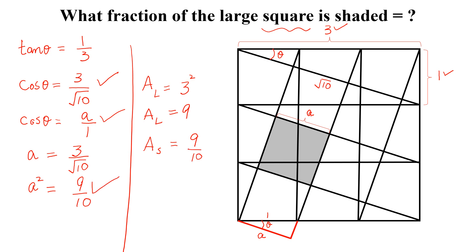Now what fraction of the large square is shaded? So area of the shaded region divided by area of the large square, 9 divided by 10, divided by 9. So we can write it multiplied by 1 by 9, 9 is cancelled with this 9 and this is equal to 1 divided by 10. And this is the required answer.